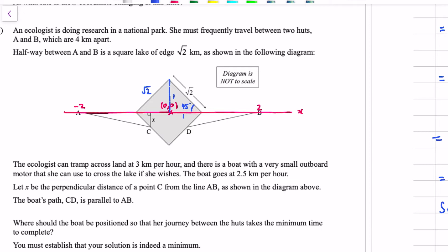The ecologist can tramp across land at 3km per hour, and there's a boat with a very small outboard motor that she can use to cross the lake if she wishes. The boat goes at 2.5km an hour. Interestingly, the boat goes at a speed slower than she can actually tramp. Let X be the perpendicular distance of a point C from the line AB. The boat's path CD is parallel to AB. The reason why these speeds have been chosen is if you get the ratio of the speeds wrong, the ratio of the speeds matters for this question as to whether there's stationary points. And so they've obviously designed this question so that it has a stationary point because we're looking for a minimum time. And so the ratio of these speeds is somewhat contrived.